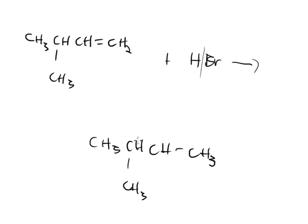Ding ding ding — it will move! And when it moves, it has to switch spots with something. It can't just shift over without an exchange. We have a hydrogen there — hydrogens are always the go-to, they're disposable. So the positive charge shifts here and that hydrogen shifts there. That's the 1,2-hydride shift we discussed, and now that carbocation is in the new position.